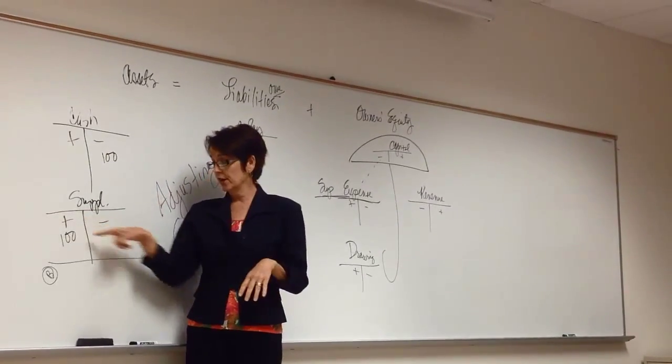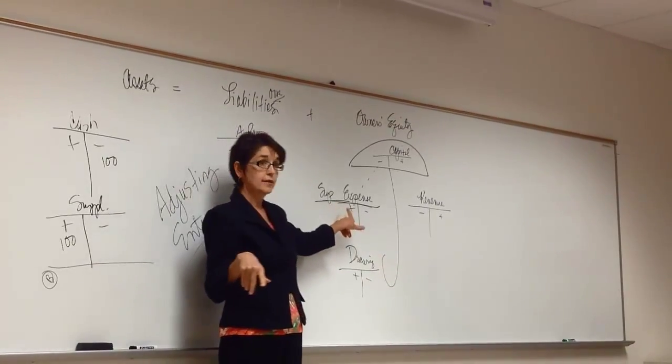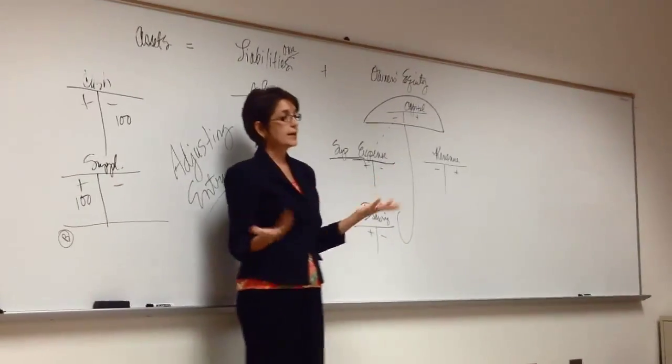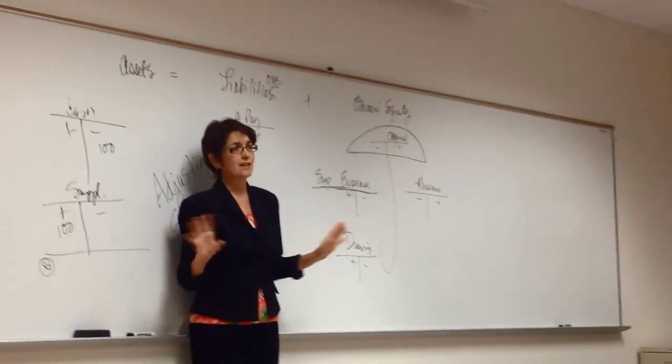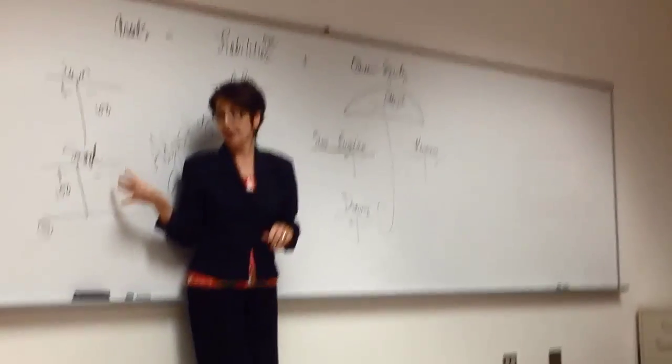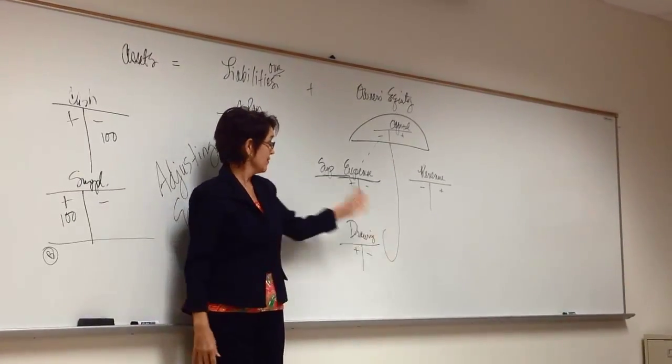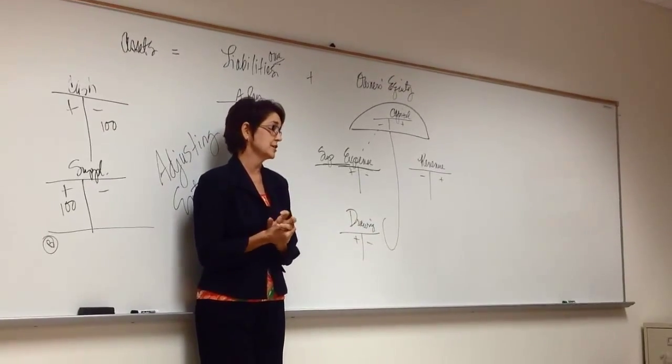So you would have a $230 here, right? And a $230 here, because my expenses went up by $230. By the way, can you just say, I'm just not going to do these adjusting entries. Scratch that. Would your books be correct? No, because you've actually used that. You no longer own those. And you actually spent those, didn't you? So you have to account for these kinds of adjustments.